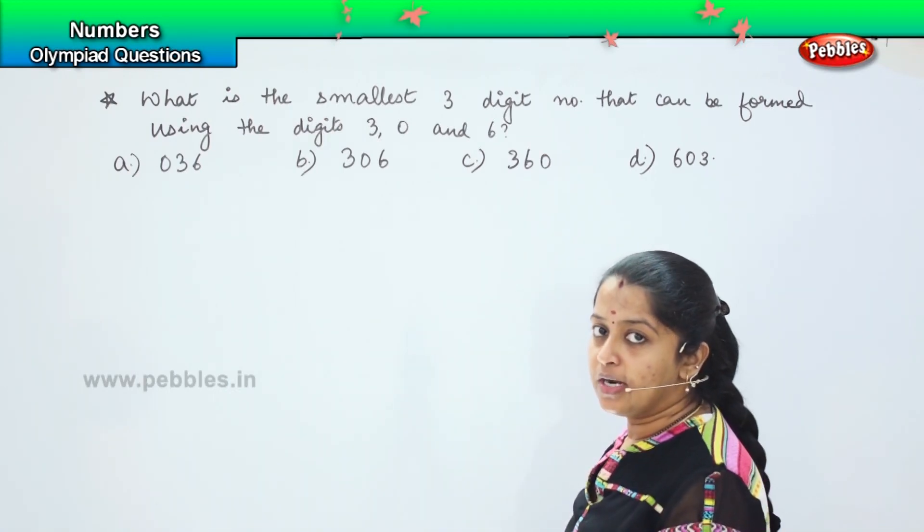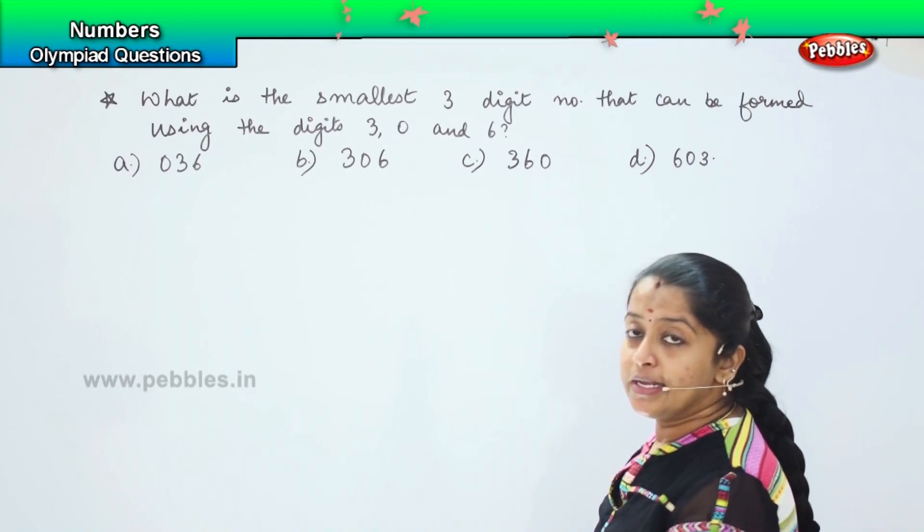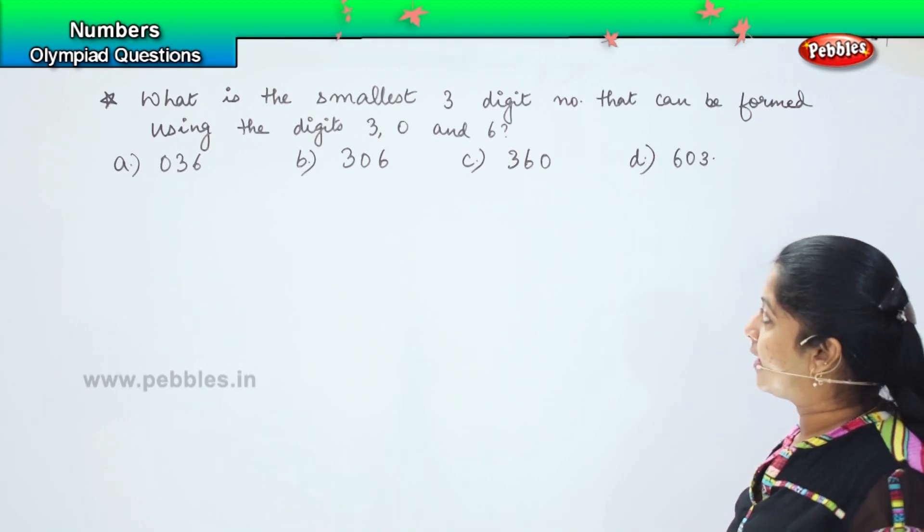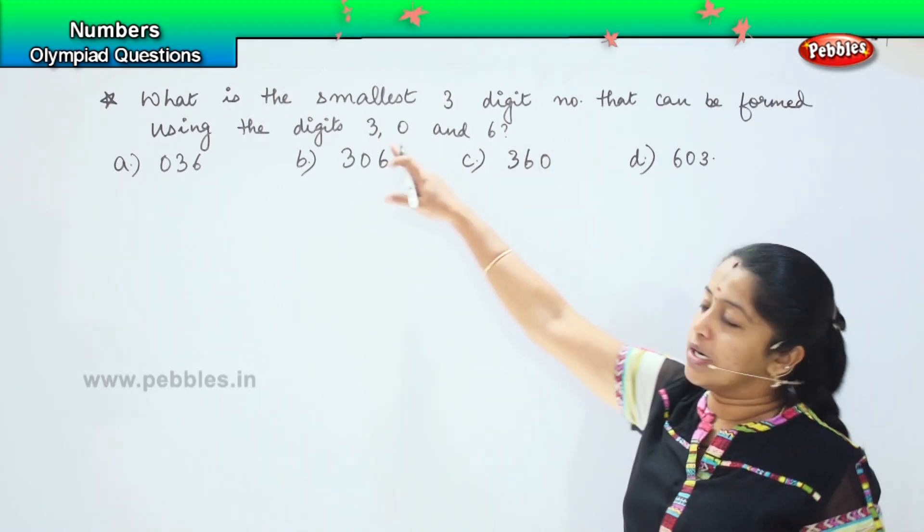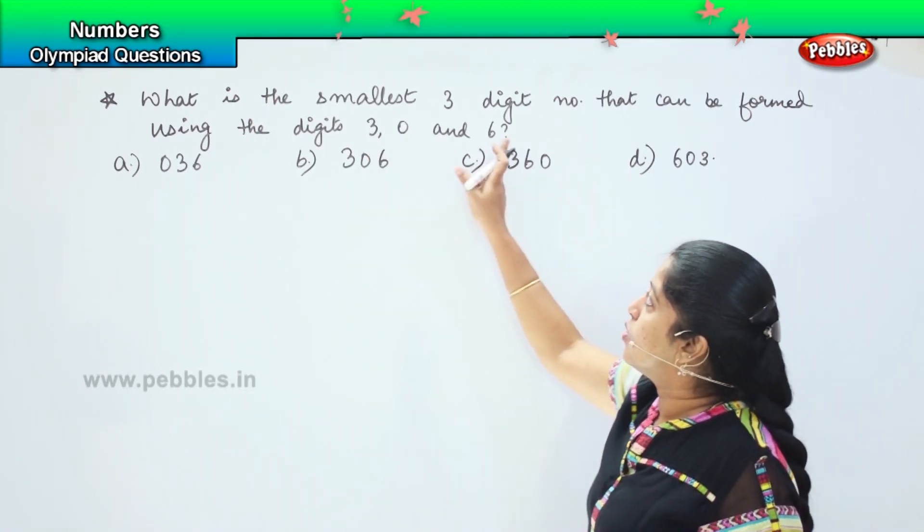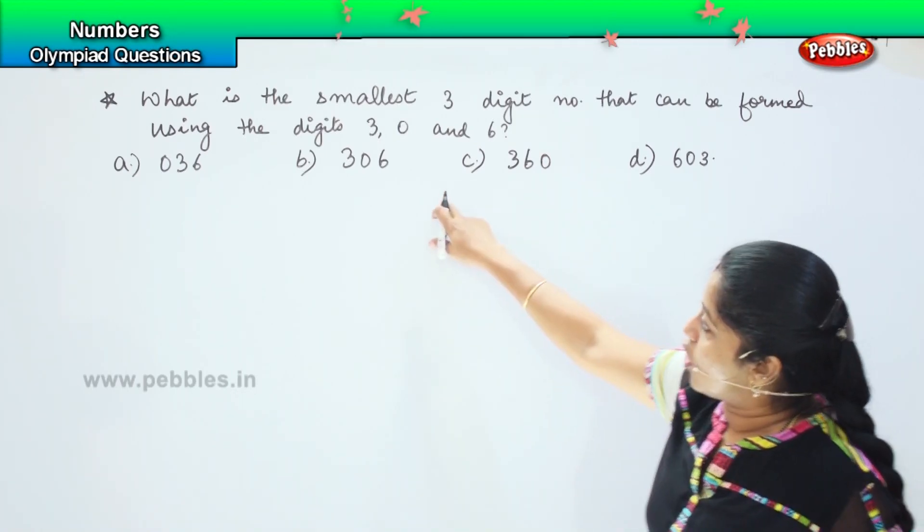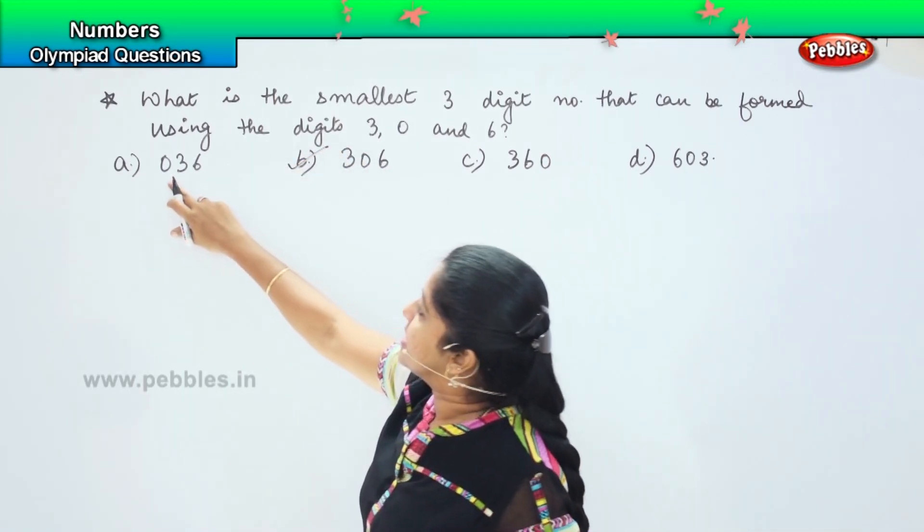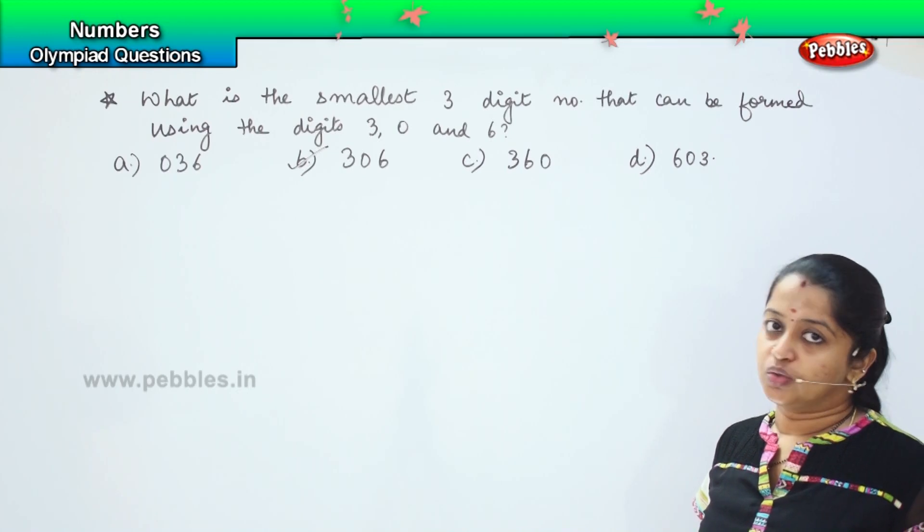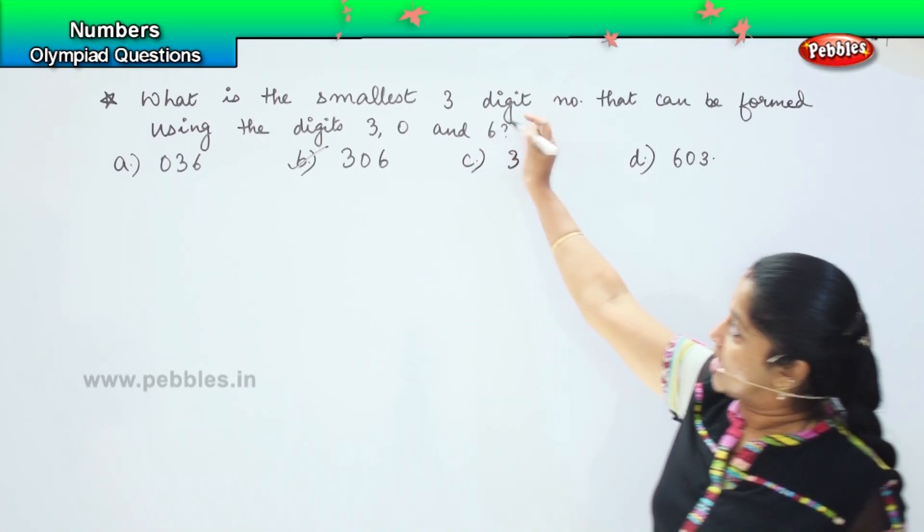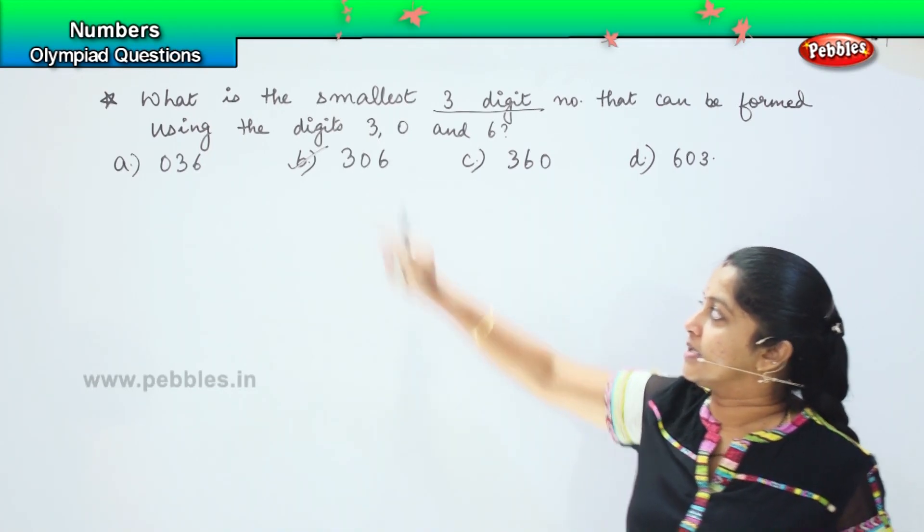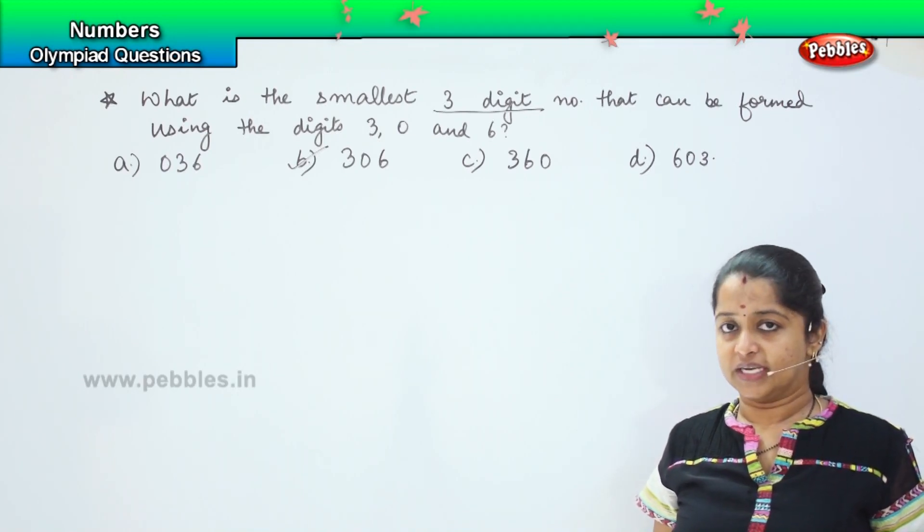If you remember children, I told you earlier that any number cannot start with 0 because it is equivalent to having nothing. Which is the smallest among the given after 0? It is 3, right. So 3, 0, 6, which is option B is the right answer. If you write 036, it will be considered as the smallest two digit number and not a three digit number. The question asks for the smallest three digit number. That is why my correct answer should be 306. Clear?